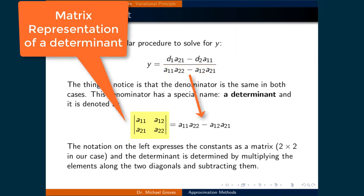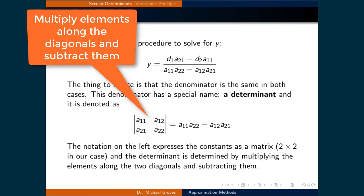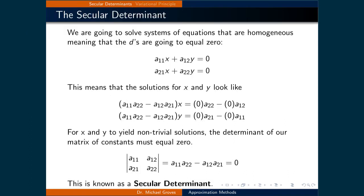The notation on the left expresses the constants as a matrix, 2 by 2 in our case, with vertical lines to the left and right. The determinant is determined by multiplying the elements along the diagonals and subtracting them.